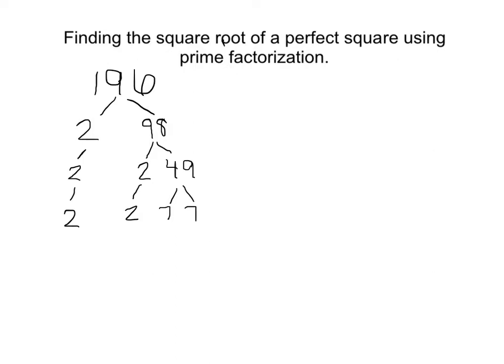Alright, so my prime factorization of 196 equals 2 times 2 times 7 times 7.